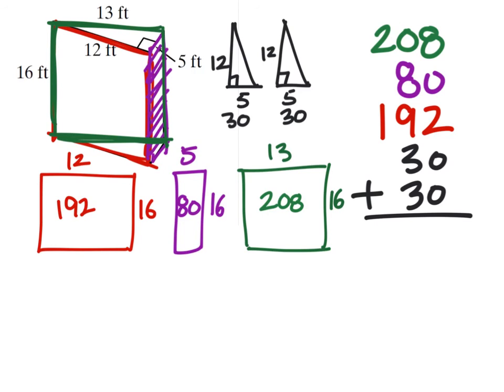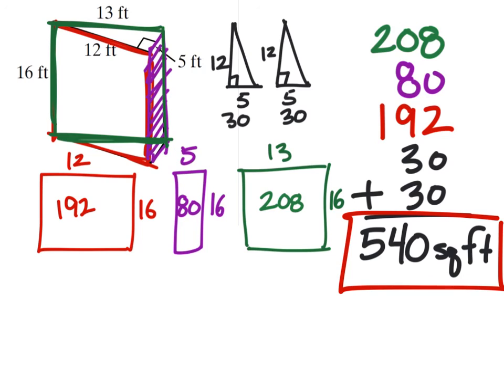So we're going to find the sum of these by adding them all together. And when I do, 540 square feet is our answer. So that is the surface area.